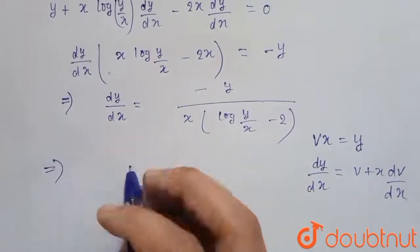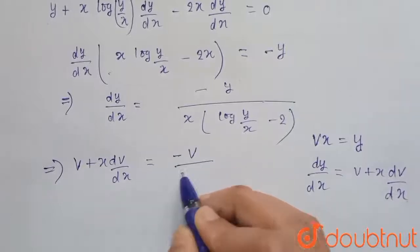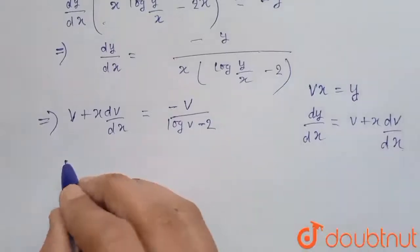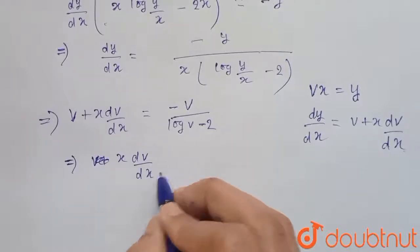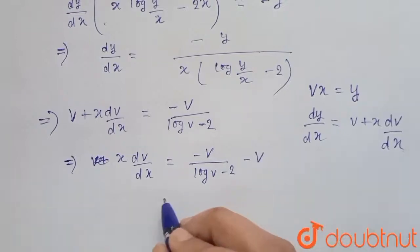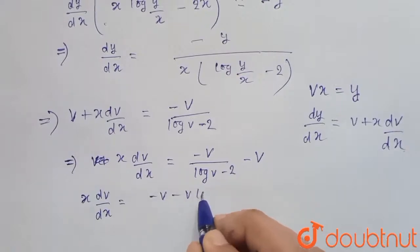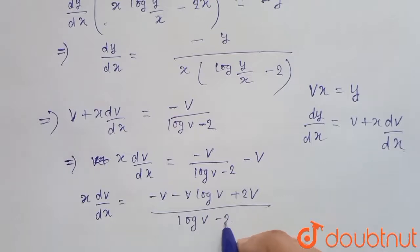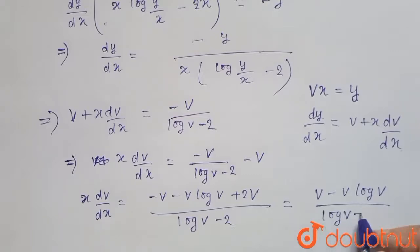Substituting these values, v plus x·dv/dx equals minus v divided by (log v minus 2). Moving v to the right-hand side and simplifying, x·dv/dx equals minus v minus v·log v plus 2v all over (log v minus 2), which simplifies to v·(1 minus log v) upon (log v minus 2).